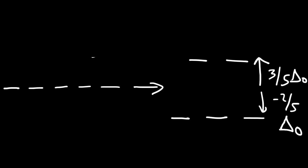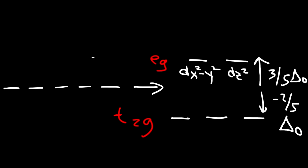The two 3d orbitals at the top are associated with something called the EG set, and the ones on the bottom are associated with the T2G set. The two 3d orbitals that went up in energy are the dx²-y² orbital and the dz² orbital. The three that went down in energy for the octahedral case are the dxy orbital, the dyz orbital, and the dxz orbital.